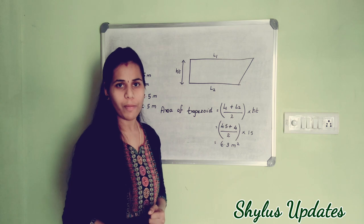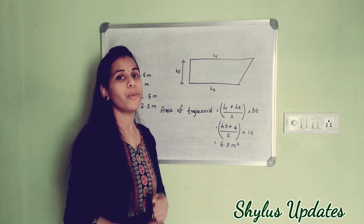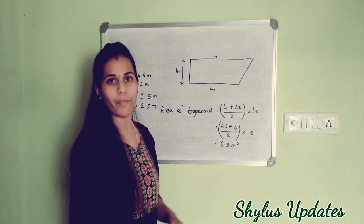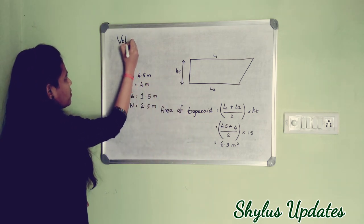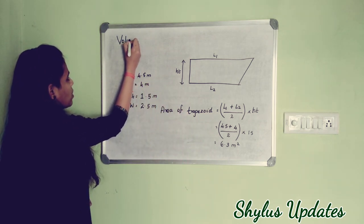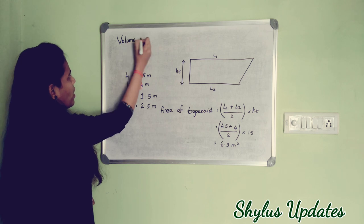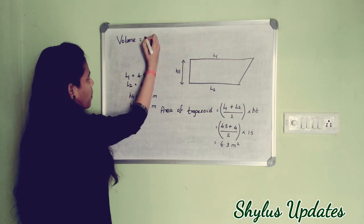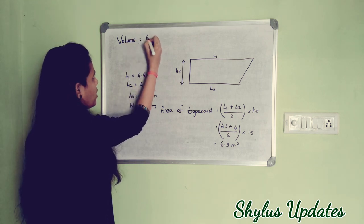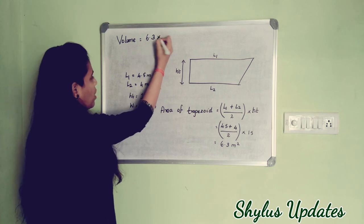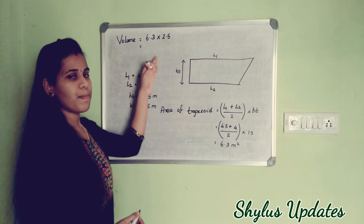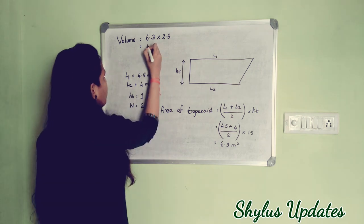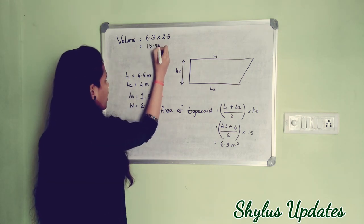Next, you have to calculate the volume. To calculate the volume, you just multiply this area with the width. Volume equals 6.3 multiplied by 2.5 meters. When you multiply this, you get the answer 15.75 cubic meters.